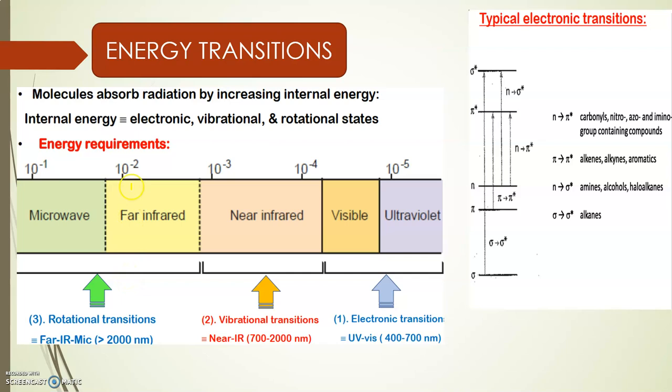The internal energy of molecules increases when they absorb radiations. This increase in internal energy can be summed as the addition of energies of their electronic, vibrational, and rotational states. The wavelength or energy for different types of radiation has been shown here. This energy increase can also lead to electronic transitions from a lower energy level to a higher energy level.